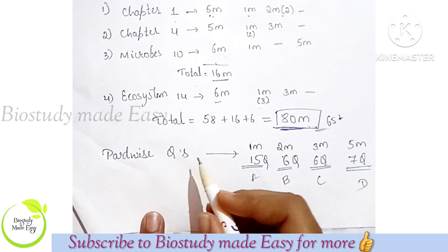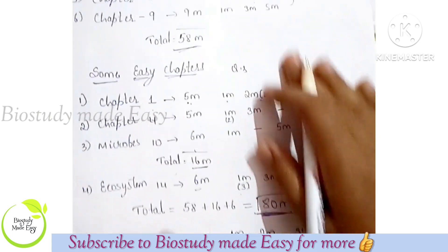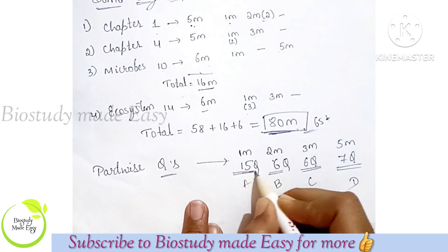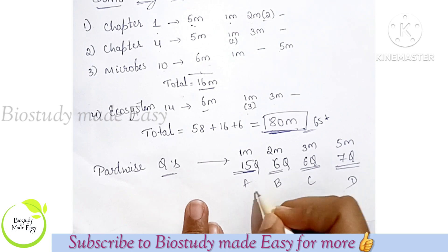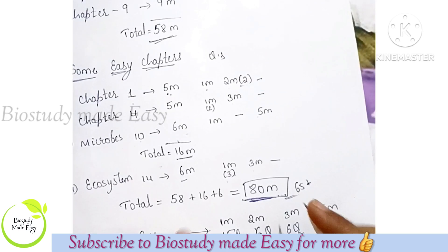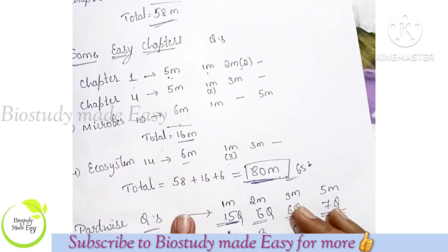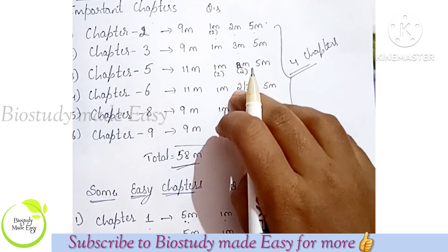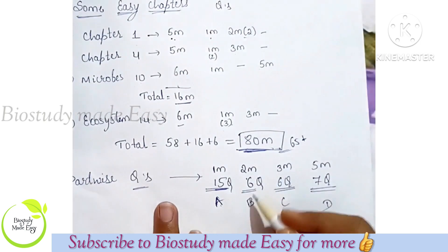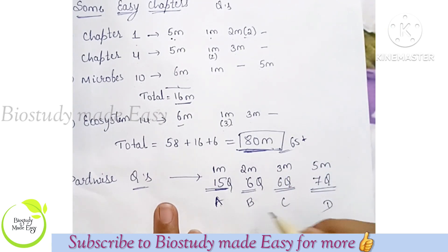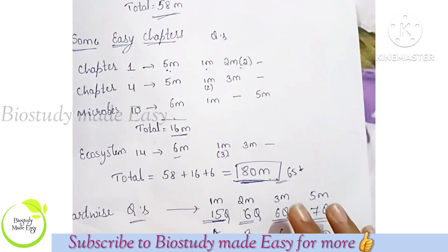Part-wise: you can write 1 mark here. Part A has 15 questions. Part B: you have 2 marks — 6 questions available, attempt any 5. So Part B is complete.